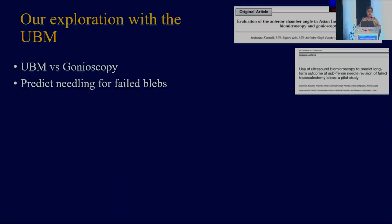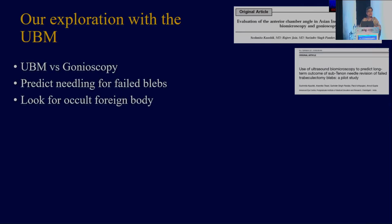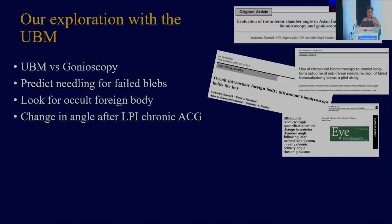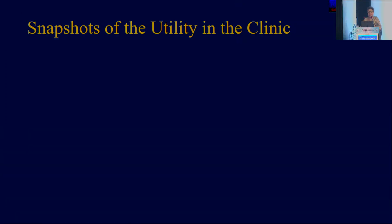In our exploration of the UBM, we've looked at UBM versus gonioscopy and found no difference in angle assessment. We could predict needling for failed blebs. We've looked for occult foreign bodies. We could diagnose unexplained intractable angle closures. These are just some snapshots of the utility of the UBM that we've used in the clinic.